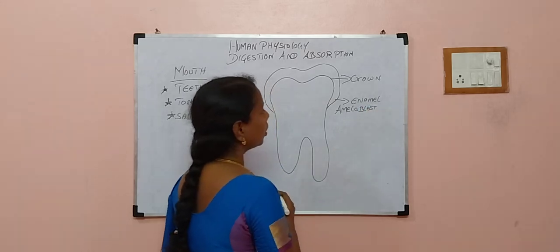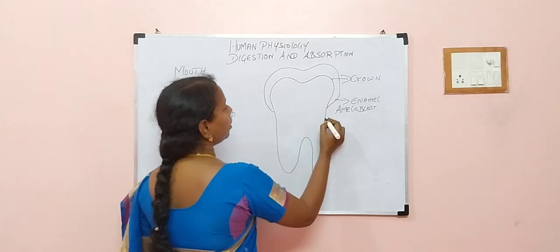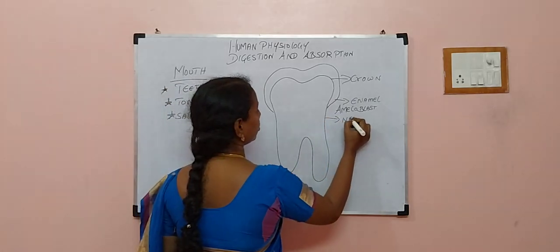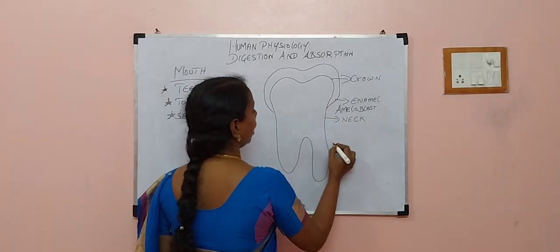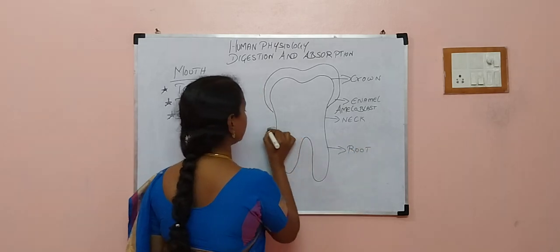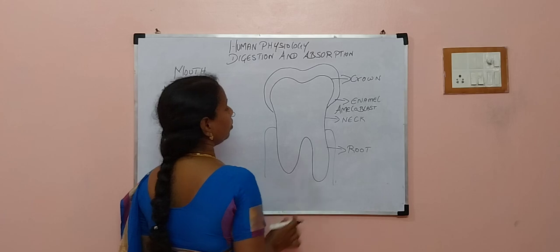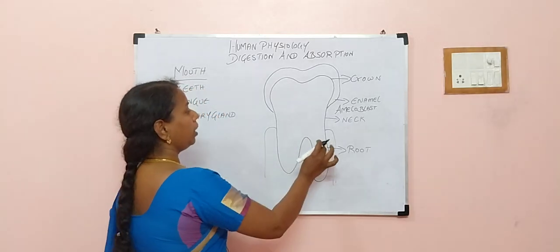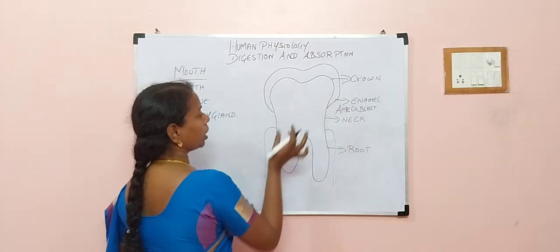And this is regarding crown. Now, neck region. And the lowermost part which is hidden is what we call it as root, which we can't able to see. And in between the root and crown, the connection is the neck region.